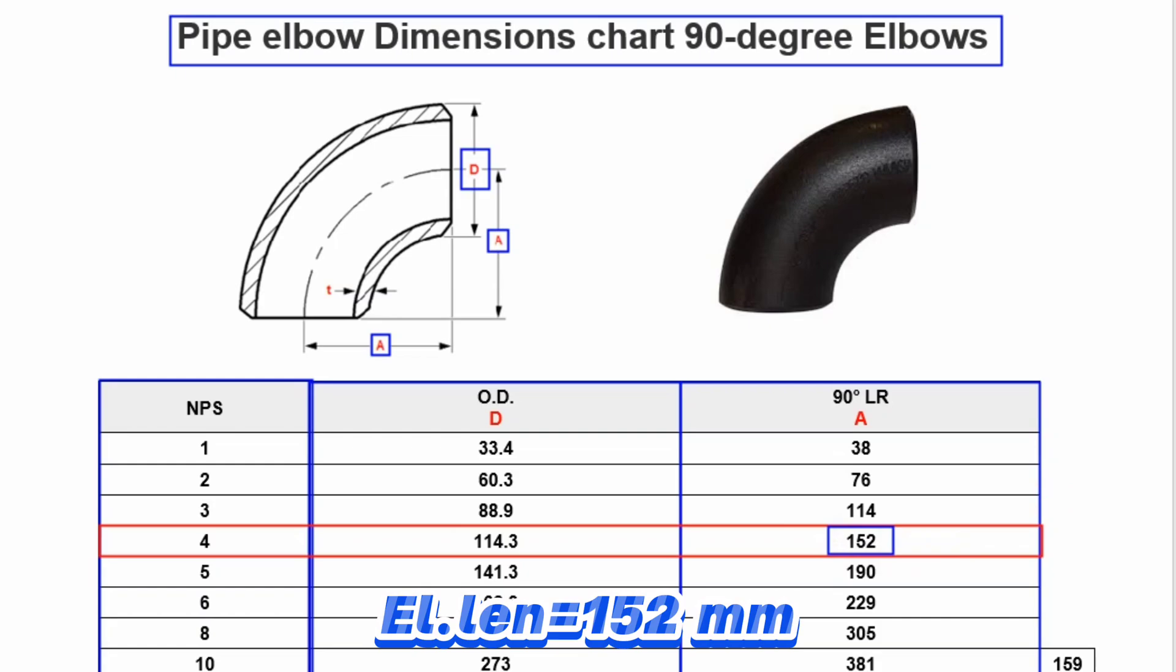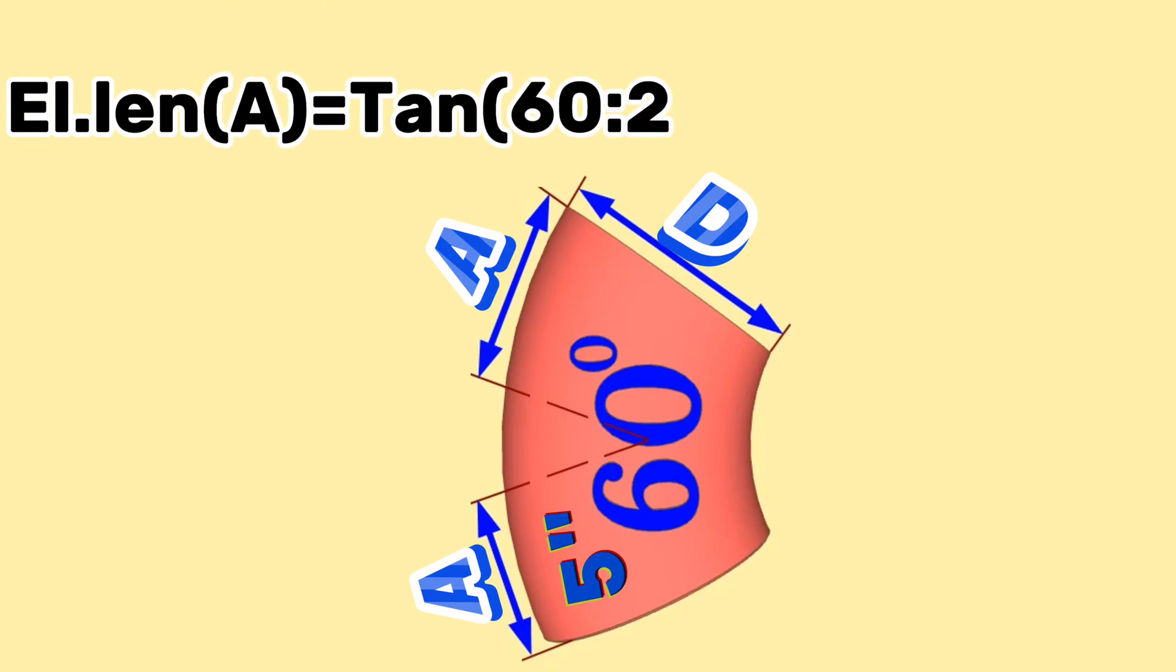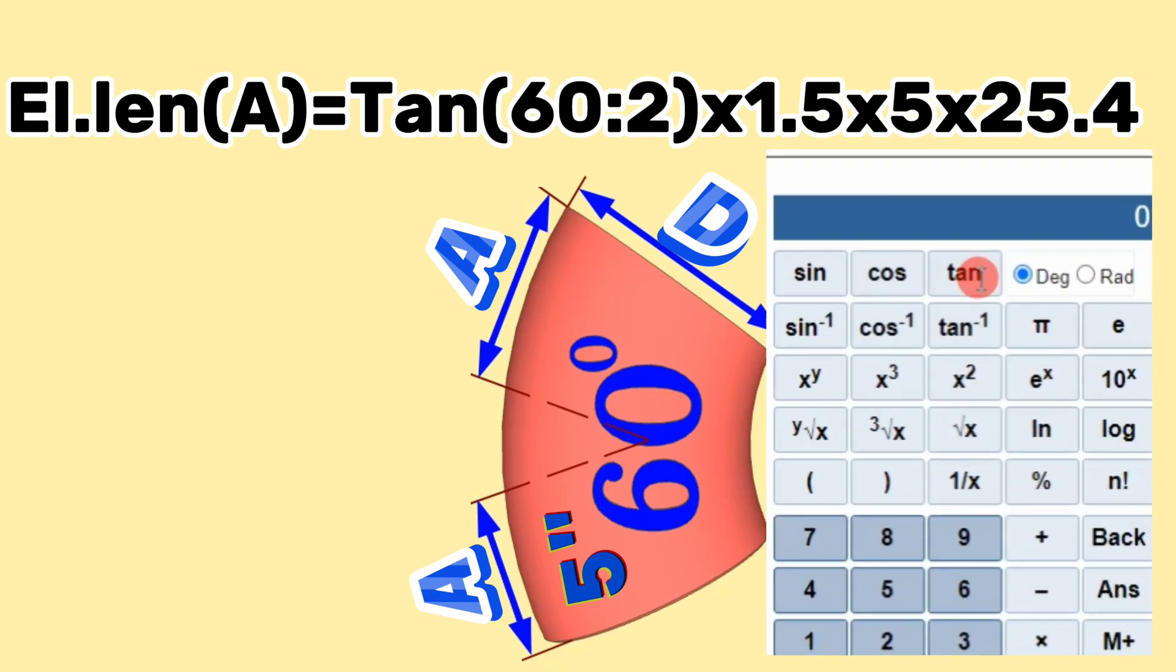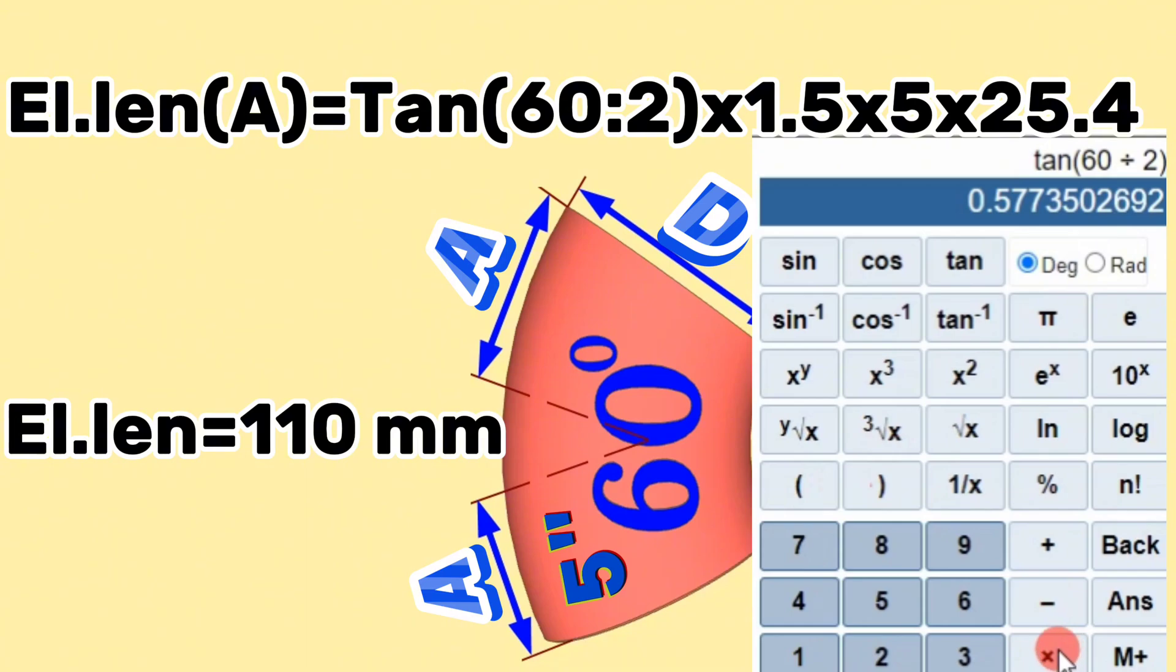By using the above formulas we can easily calculate any degree elbow's length. Let's calculate 5 inch 60 degree elbow length. According to the formula, the length of the elbow equals tangent of 60 degrees divided by 2, multiplied by 1.5, multiplied by nominal pipe size 5, and multiplied by 25.4. Using a scientific calculator, we found 5 inch 60 degree elbow length equals 110 millimeters.